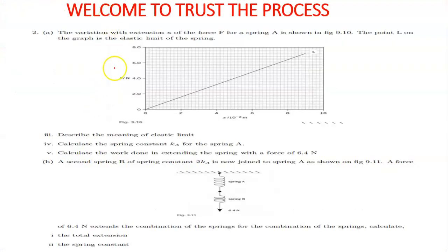Welcome to Trust the Process. In this video we are going to be answering question 2 of tutorial sheet 1, PHY102. The question reads: the variation with extension X of the force F for a spring A is shown in figure 9.10. The point L on the graph is the elastic limit of the spring.